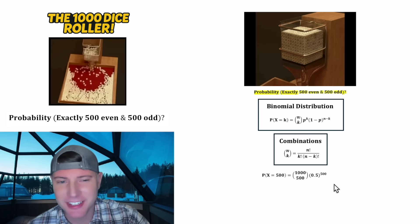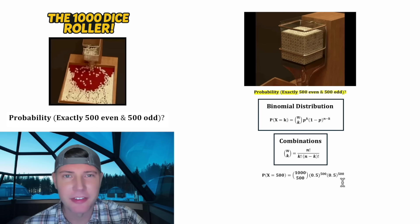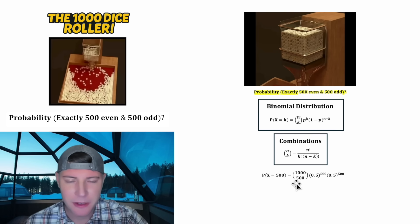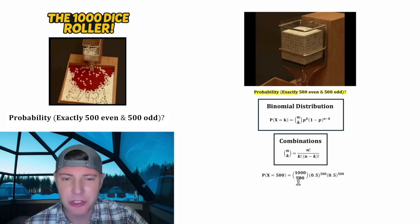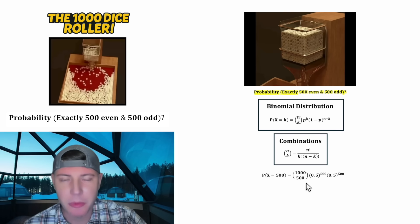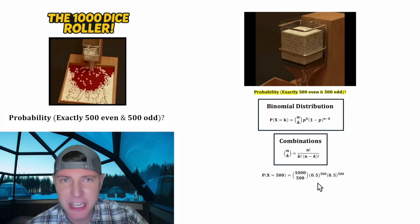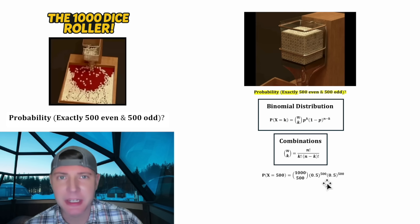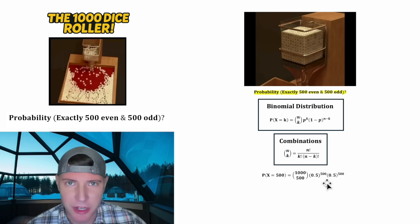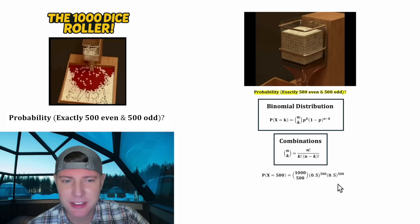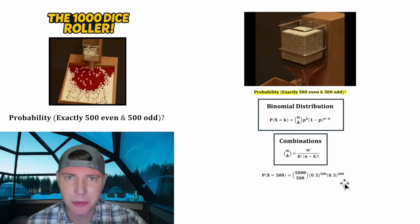The probability of an odd die is 0.5, and we want 500 of those. So in summary, we do the total number of dice choose the number that we want to be even, the probability of getting an even die to the power of how many even dice we want, then the probability of an odd die to the power of the number of odd dice that we want.